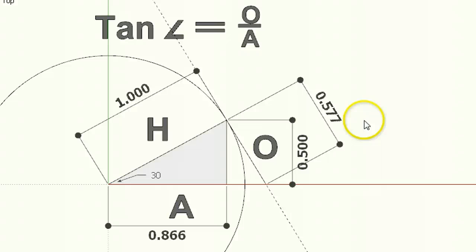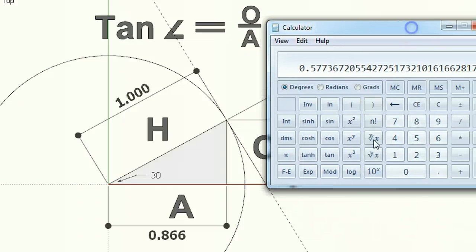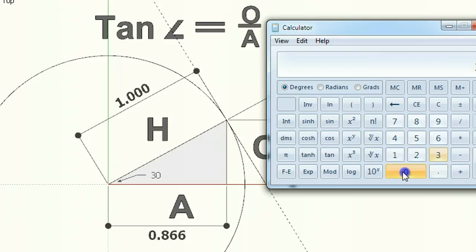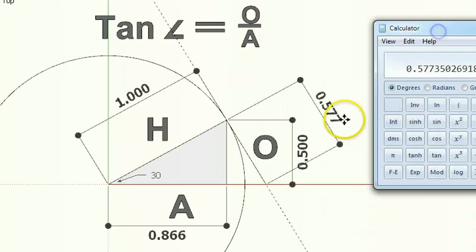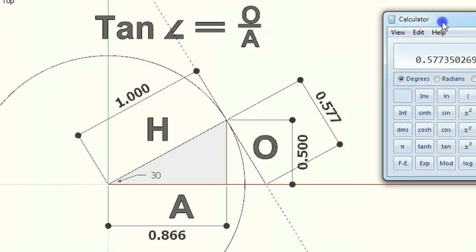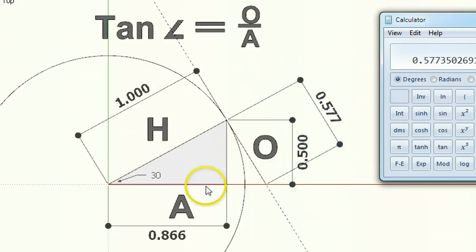So we know the angle. Let's clear this out. We know the angle is 30. We click tan and we get that value 0.577. So I've kind of repeated myself there, but I hope you can see where this is, where this has come from.